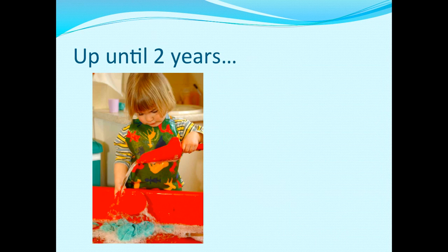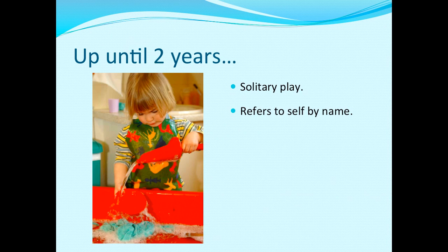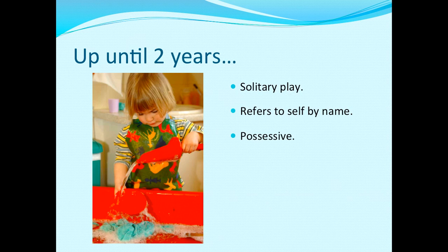Up until two years, solitary play is really the predominant play that children will display. During this period, children will often refer to themselves by name rather than saying 'I'. They might say 'Sammy biscuit', which might mean 'Sammy wants a biscuit' or 'I want a biscuit'. This is typical of this stage. They're possessive, so sharing is definitely not age appropriate in the solitary play phase, and the things that are theirs are really theirs.